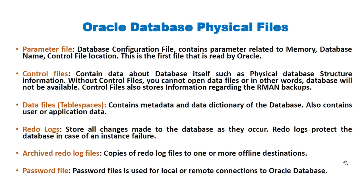Let's understand the Oracle database physical files. An Oracle database consists of a parameter file, which is the first file read by Oracle — it's a configuration file related to memory, database name, control file location, etc. The control file contains information about the physical database itself and also stores information about the RMAN backup. Without the control file you cannot open your database. Data files and tablespaces are the logical and physical storage — tablespaces are logical, data files are physical, and they contain metadata, data dictionary, and user or application data.